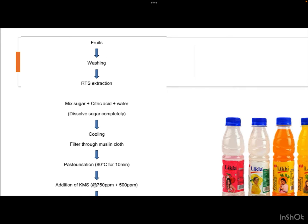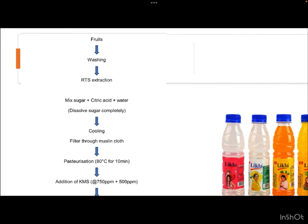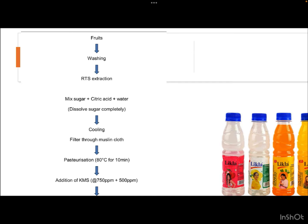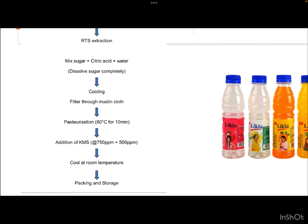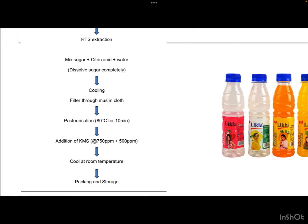Looking at the manufacturing flowchart: fresh fruits, neither overripe nor underripe, are washed with chlorine water at 50 ppm. Juice or pulp is then extracted. Sugar, citric acid, and water are mixed, with sugar completely dissolved. The solution is cooled, filtered through muslin cloth, and pasteurized at 80 degrees Celsius for 10 minutes. Potassium metabisulfite is added at 700 ppm plus 500 ppm.